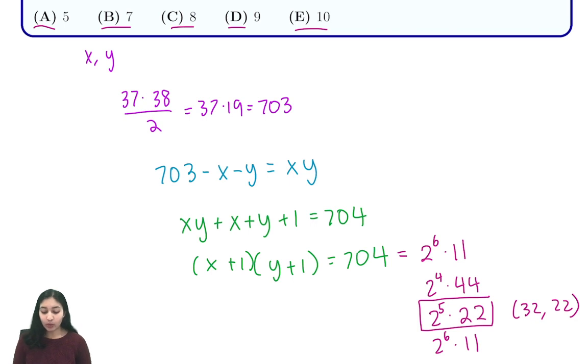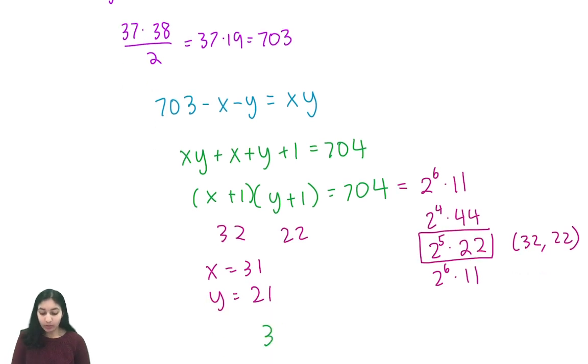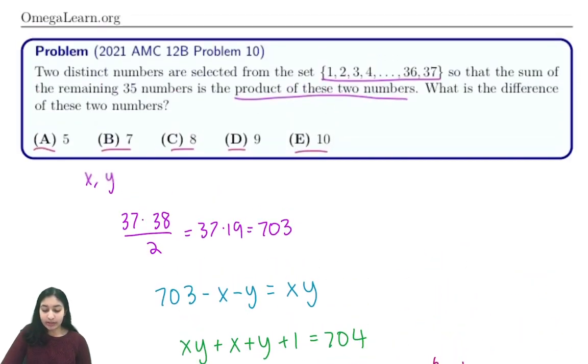So if x plus 1 and y plus 1 are 32 and 22, that tells us that x equals 31 and y equals 21. So from here all we have to do is calculate the difference between our two things, which is 31 minus 21, or 10, and that gives us our answer, which is option E.